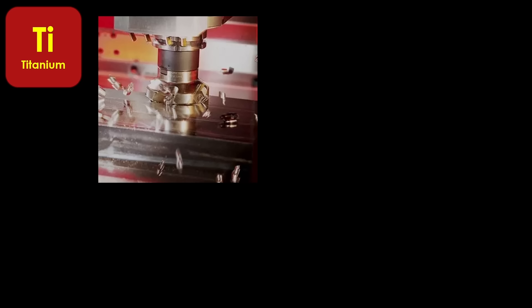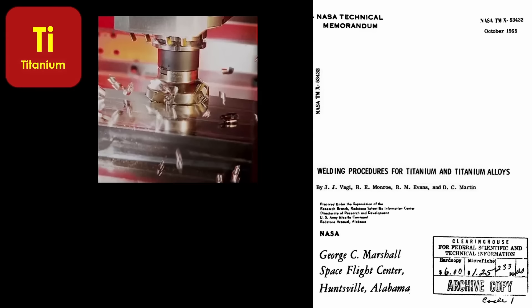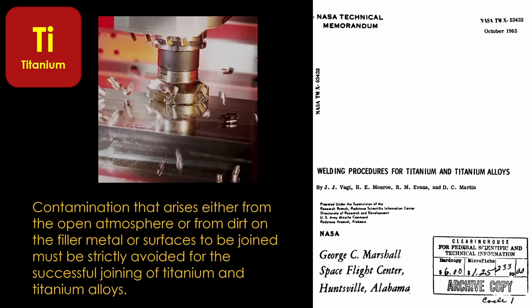One of the sources I came across described titanium as notoriously difficult to machine. Welding is possible, and NASA has a 236-page document that tells you how to do it properly. It says the following about the process: Contamination that arises either from the open atmosphere or from dirt on the filler metal or surfaces to be joined must be strictly avoided for the successful joining of titanium and titanium alloys. If you don't weld it exactly right, the impurities you get lead to embrittlement, and the weld is not as strong as it should be.